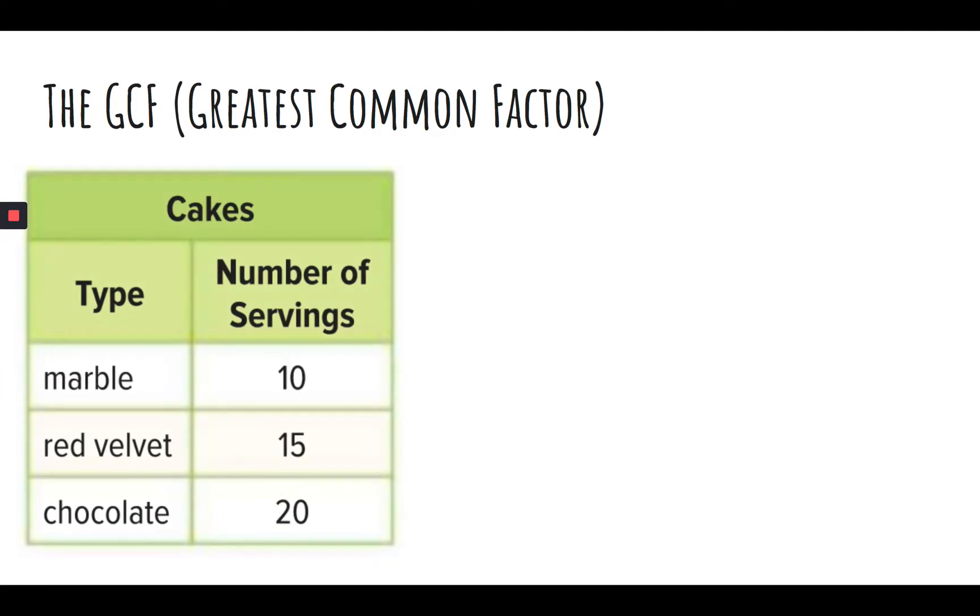We're going to look at a chart here, number of servings and cakes. And you're asked to find the greatest common factor of these three numbers, 10, 15, and 20. So you want the largest number that will fit into all three of those numbers.